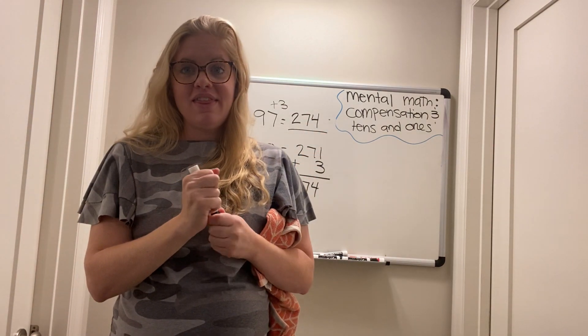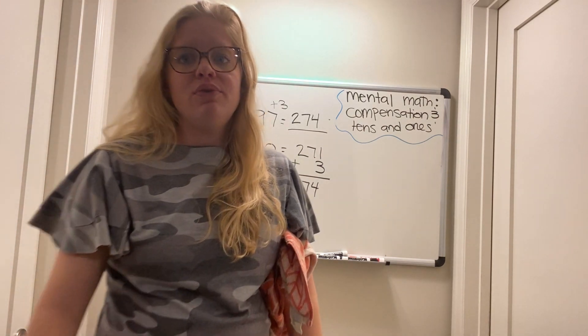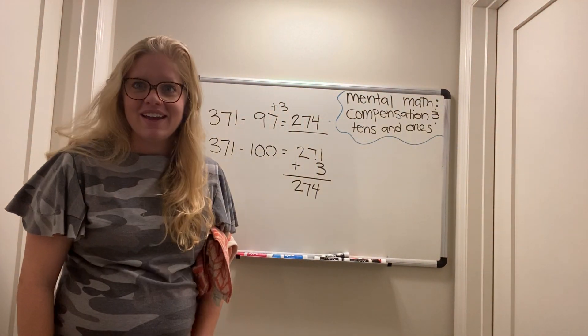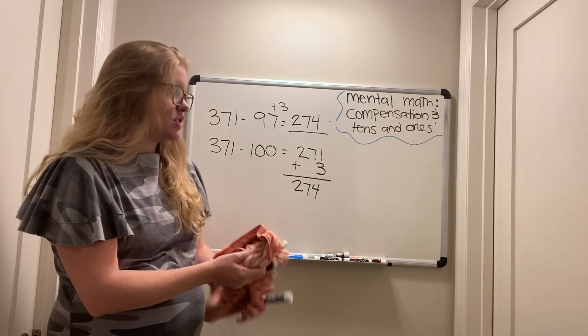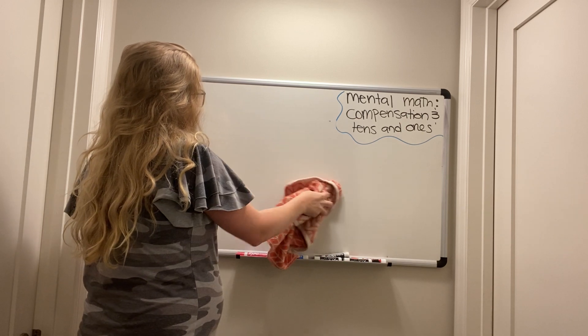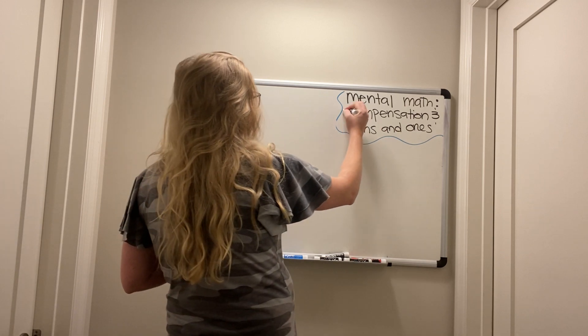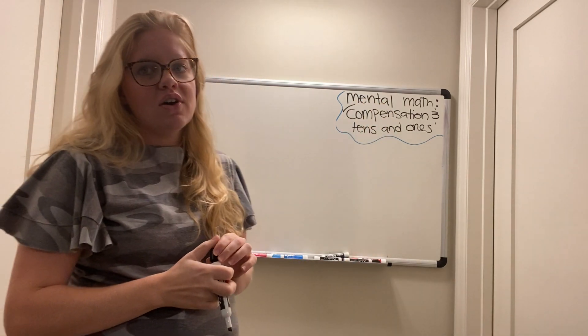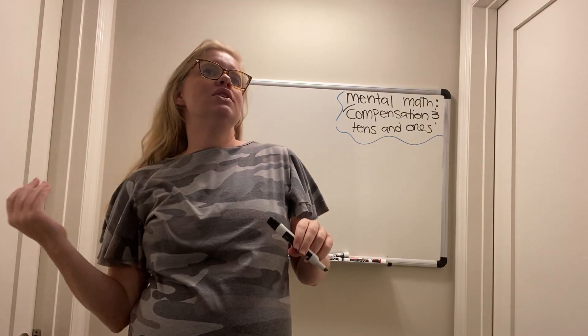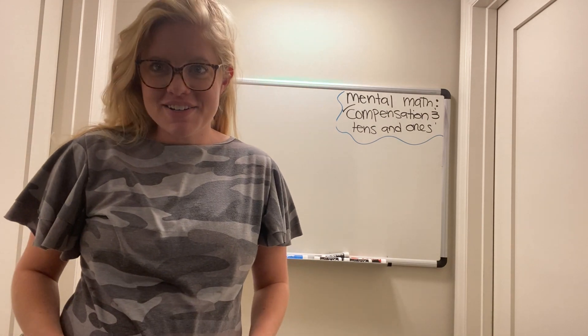All right scholars. That is our mental math strategy called compensation. Now, if we were in person and you were in my math class, we would do mental math every single day and a lot of you would get really familiar with compensation. So I hope that you're ready for that once we come back to school. All right. Now check. We did compensation. Now our next one is called the tens and ones strategy. Now the tens and ones strategy can be used in multiplication, addition and subtraction. So today we're just going to look at addition.